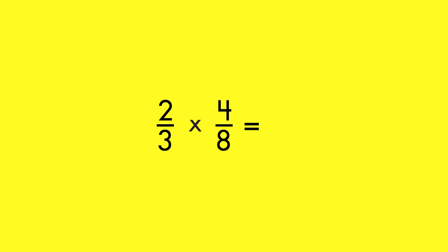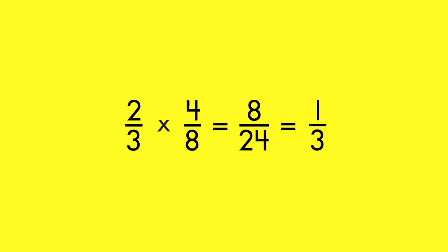To multiply any fraction by any other fraction, multiply the numerators. Then, multiply the denominators. If possible, simplify the product.